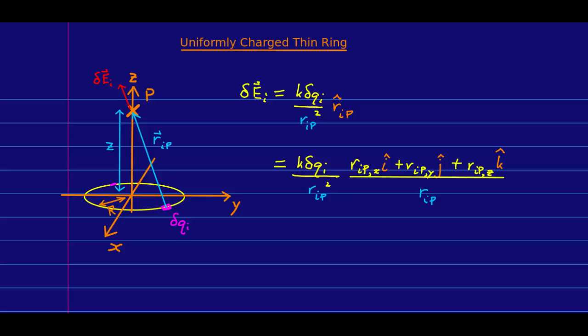For every point delta Q, there is a piece of the ring on the far side that will produce a corresponding delta E and both the x and y components of those will cancel out. And so, in fact, all we're interested in is the z component of this field.